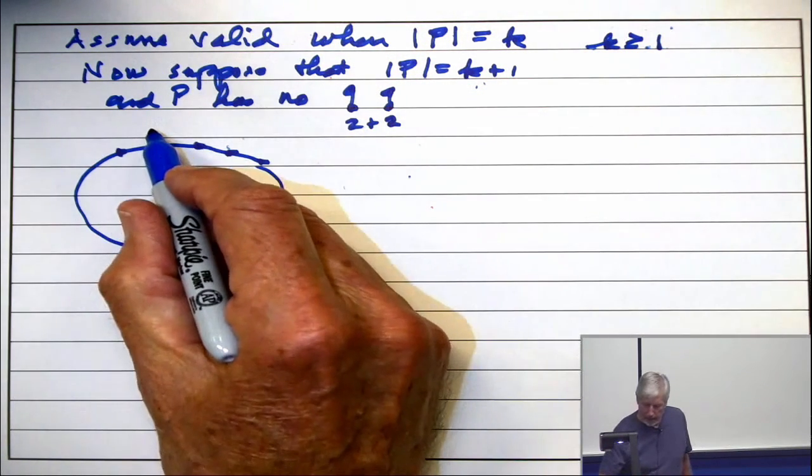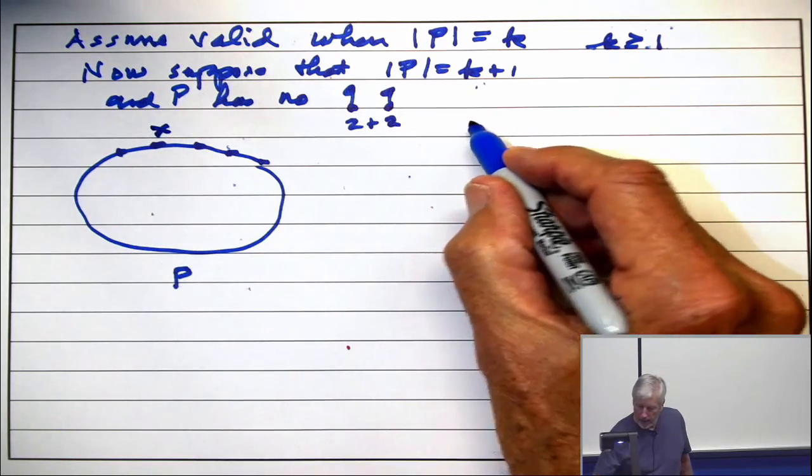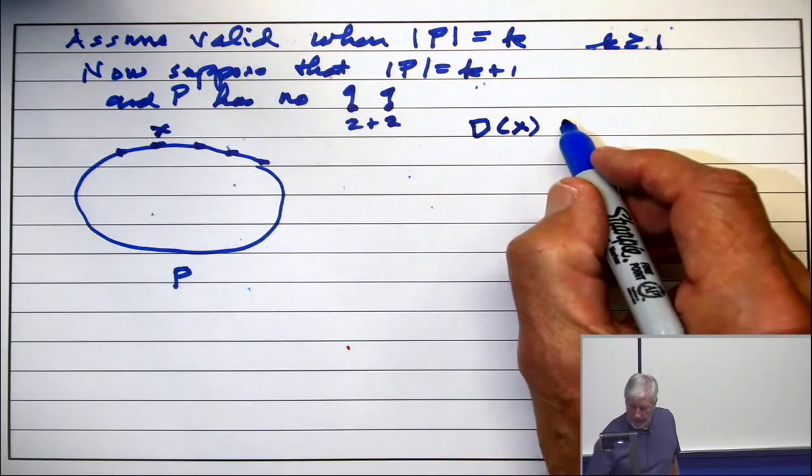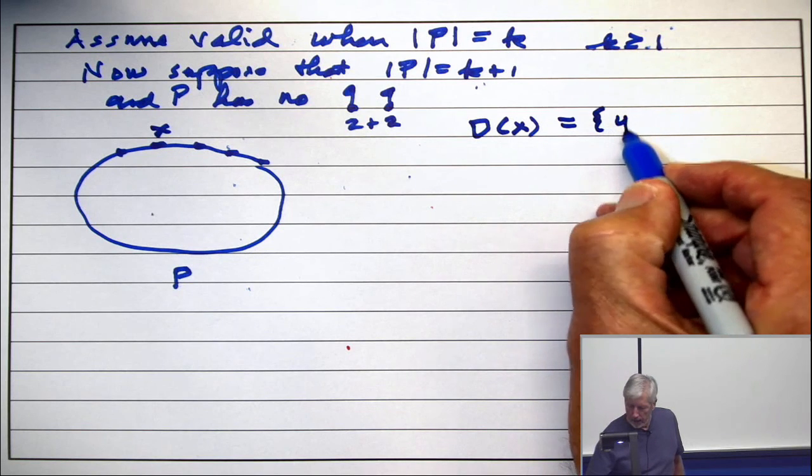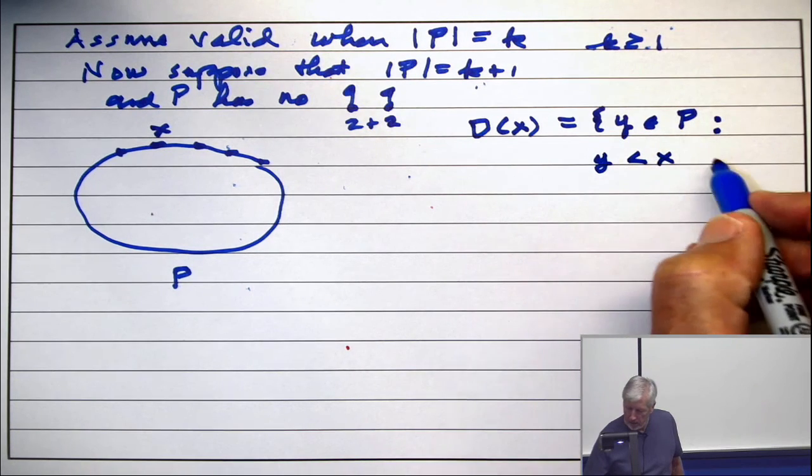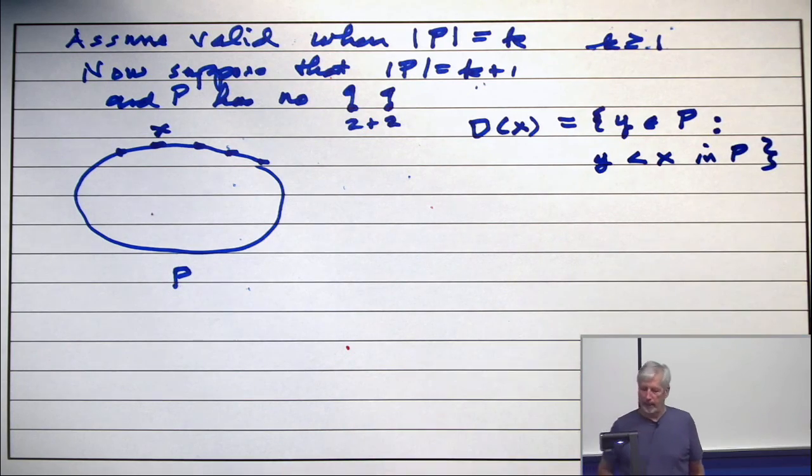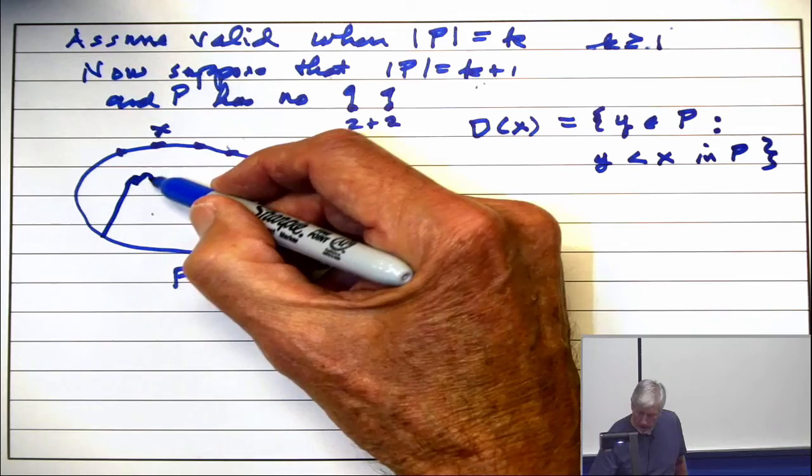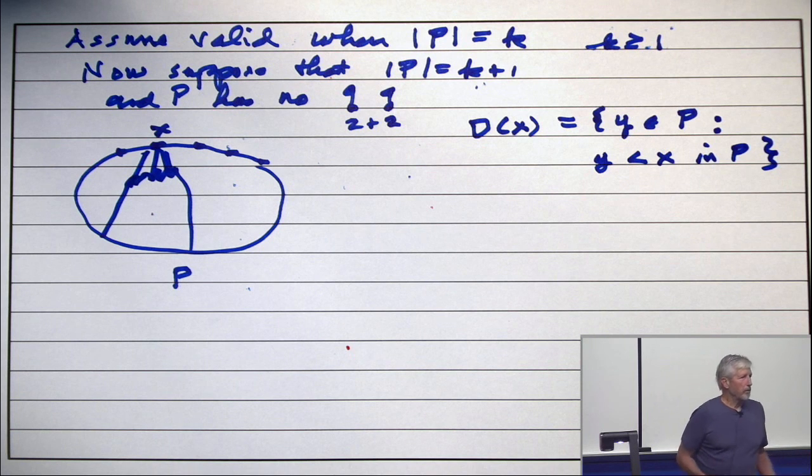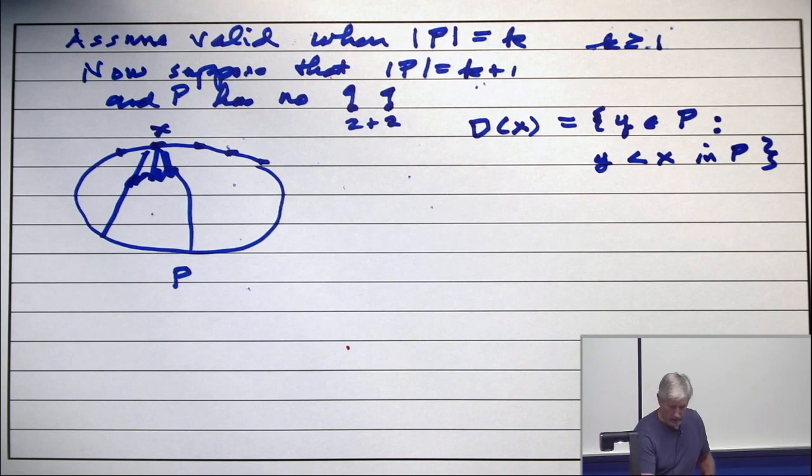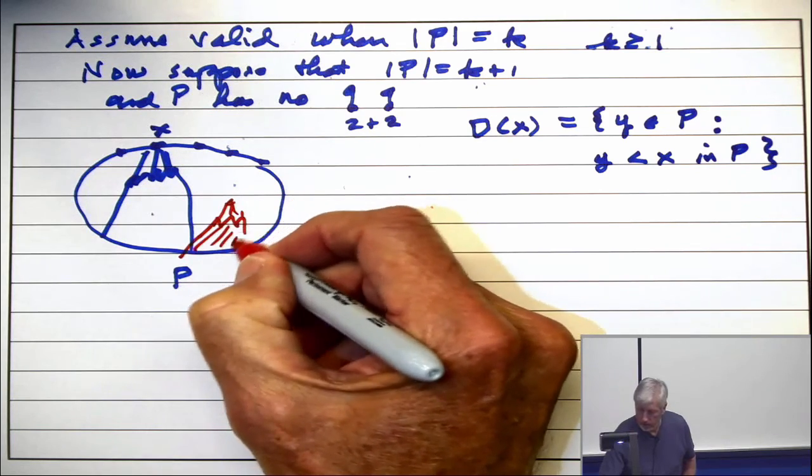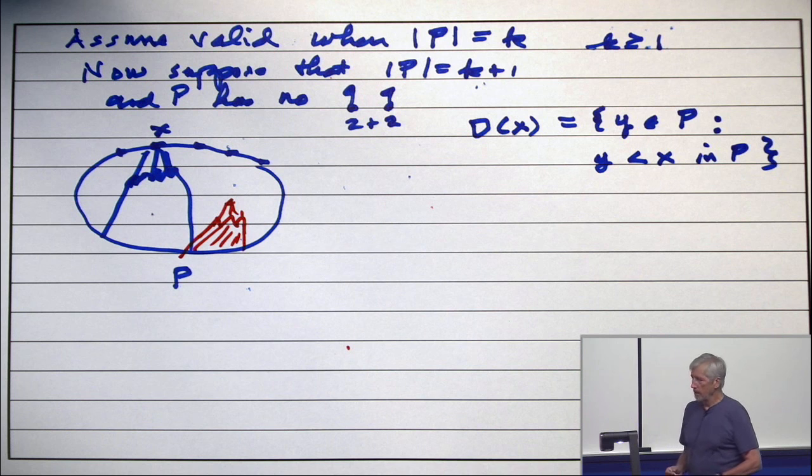All right. Now, when you take any maximal element, you can calculate what's called the down set from X. In fact, you can talk about the down set for any element, whether it's a maximal element or not. It's all the Y's that belong to the poset that have the property that Y is less than X. That's the down set from X. So, intuitively, the down set from X is this stuff. Every element has a down set. An element over here has a down set. It's all this stuff. All the elements that are less than.